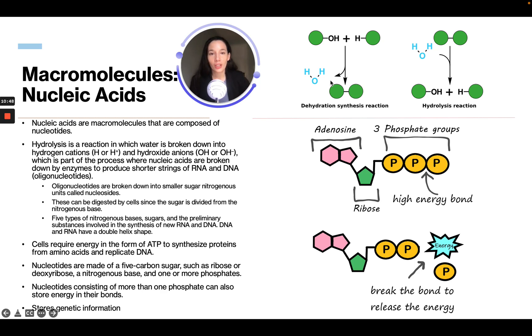We can see here a dehydration synthesis reaction. It's pulling water out and making this new product. In a hydrolysis reaction, water is coming in and separating this product into two separate products. This is an example of a nucleotide. We have our phosphate groups, our ribose, and our adenosine. To break the phosphorus group bonds, we need that high energy to be released.